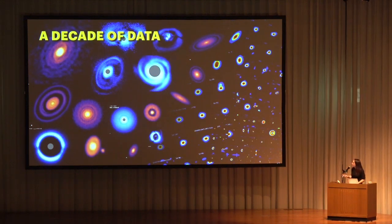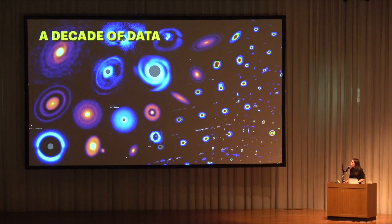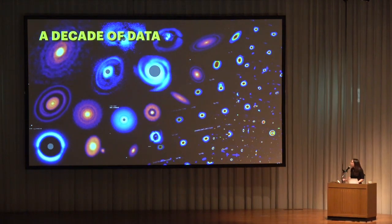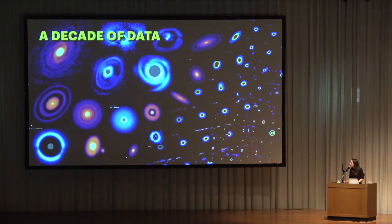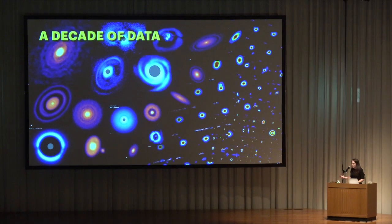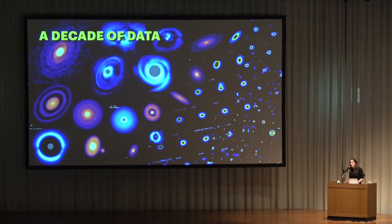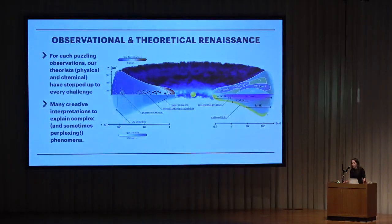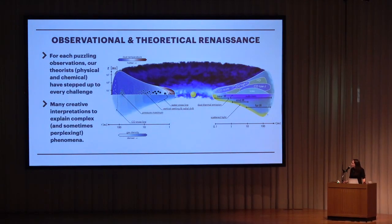We have beautiful data seen in previous talks and upcoming talks on source-specific studies where we can really resolve the fine details. We're also in the decade where we can start to statistically sample populations of disks — hundreds of disks — and learn a lot about them as a larger sample. This has enabled us to start learning more about the big picture questions: what do disks look like at their largest scale, and what are the typical conditions of planet formation?